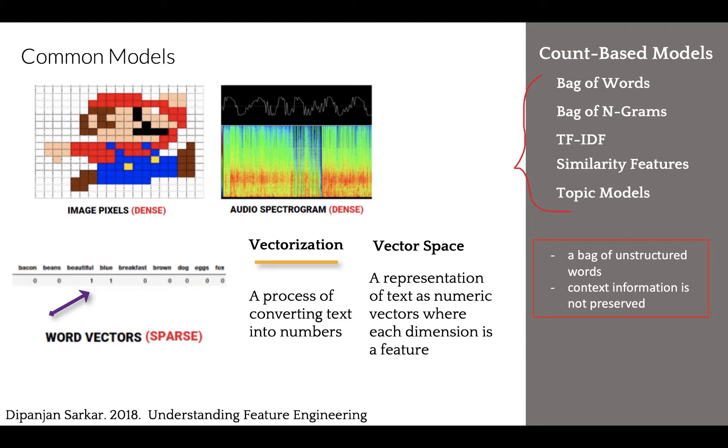Vectors are combined to form a vector space. A vector space model is simply a mathematical model to represent unstructured text or any other data as numeric vectors, such that each dimension of the vector is a specific feature attribute.